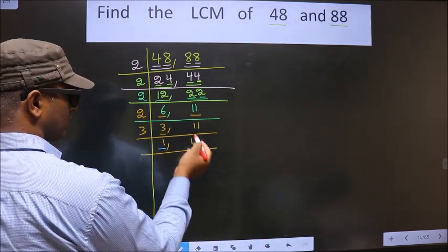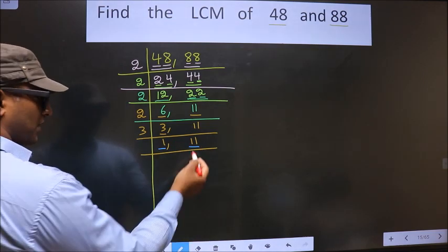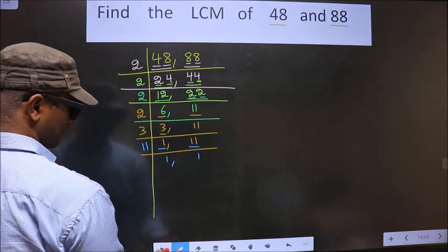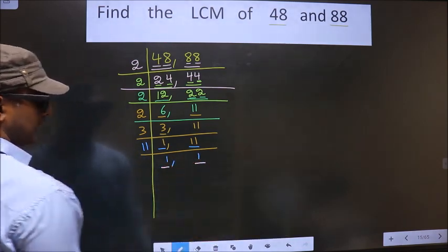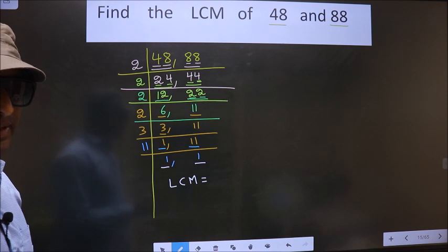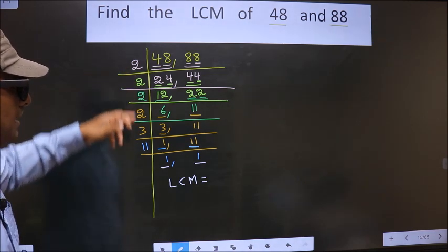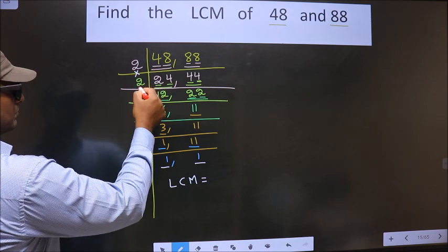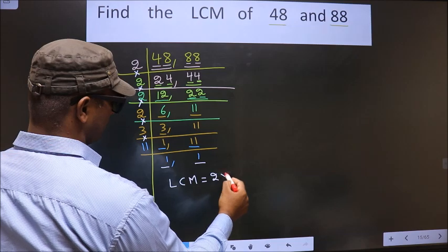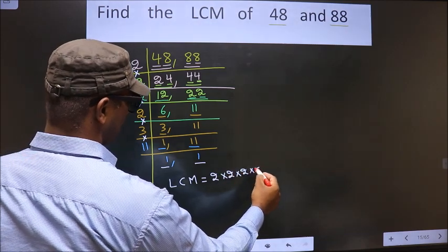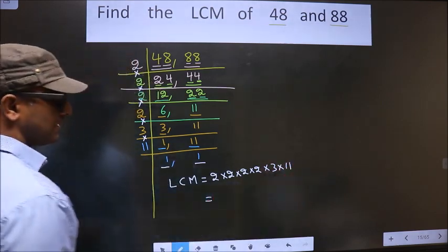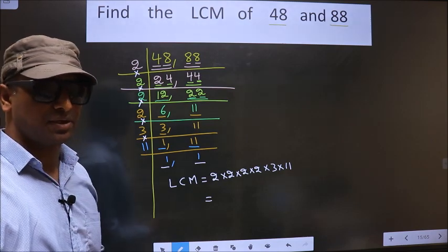Now here we got 1, so focus on the next number, that is 11. 11 is a prime number, so we take 11 once: 1×11=11. Now we got 1 in both places. So our LCM is the product of all these numbers.